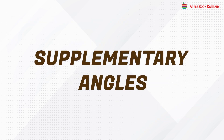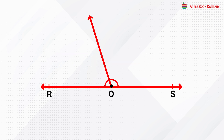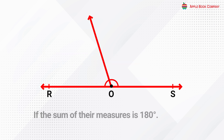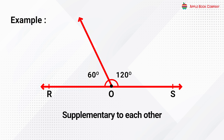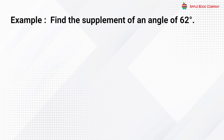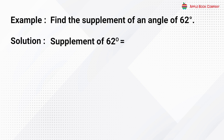Supplementary angles: two angles are said to be supplementary if the sum of their measures is 180 degrees. For example, the two angles measuring 120 degrees and 60 degrees are supplementary to each other; each angle is said to be the supplement of the other. The supplement of 62 degrees is equal to 180 minus 62, which equals 118 degrees.